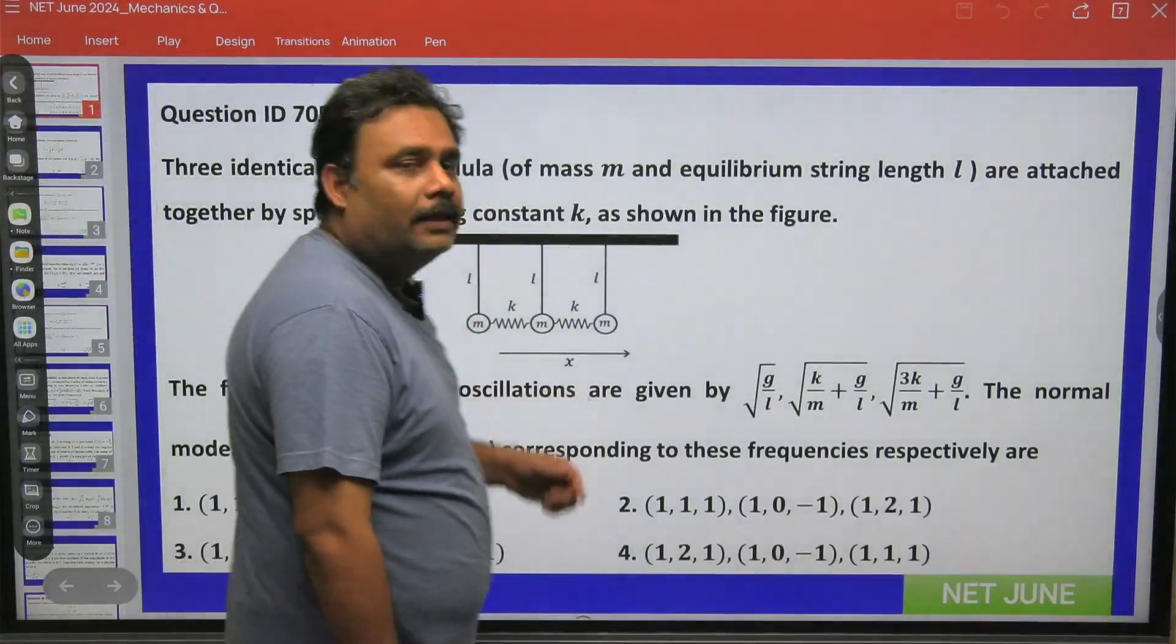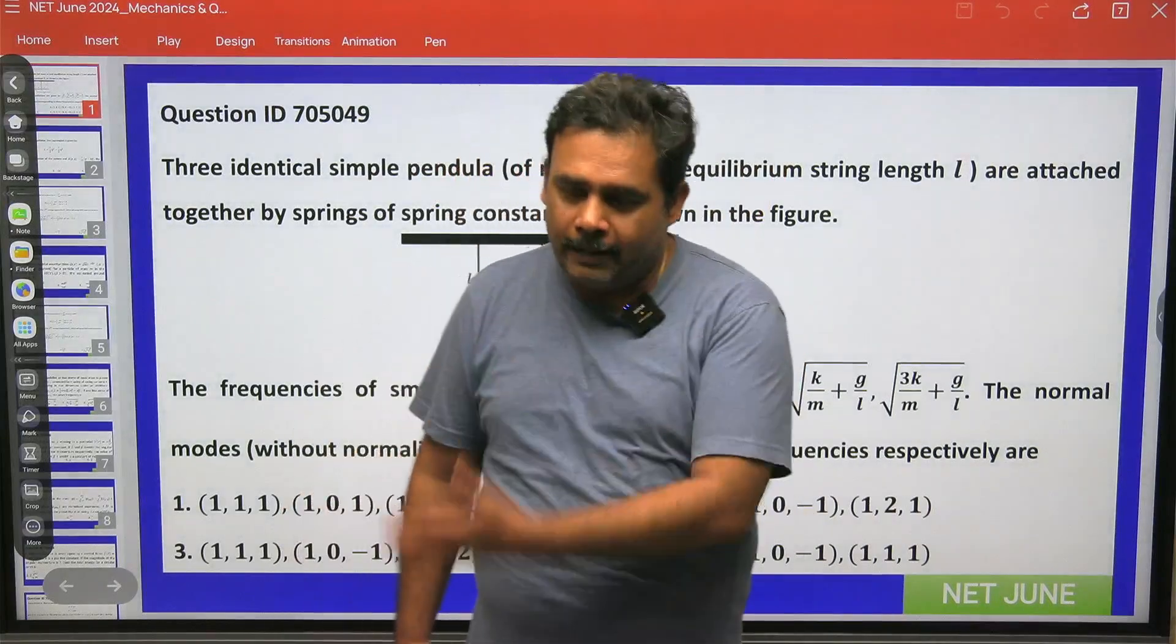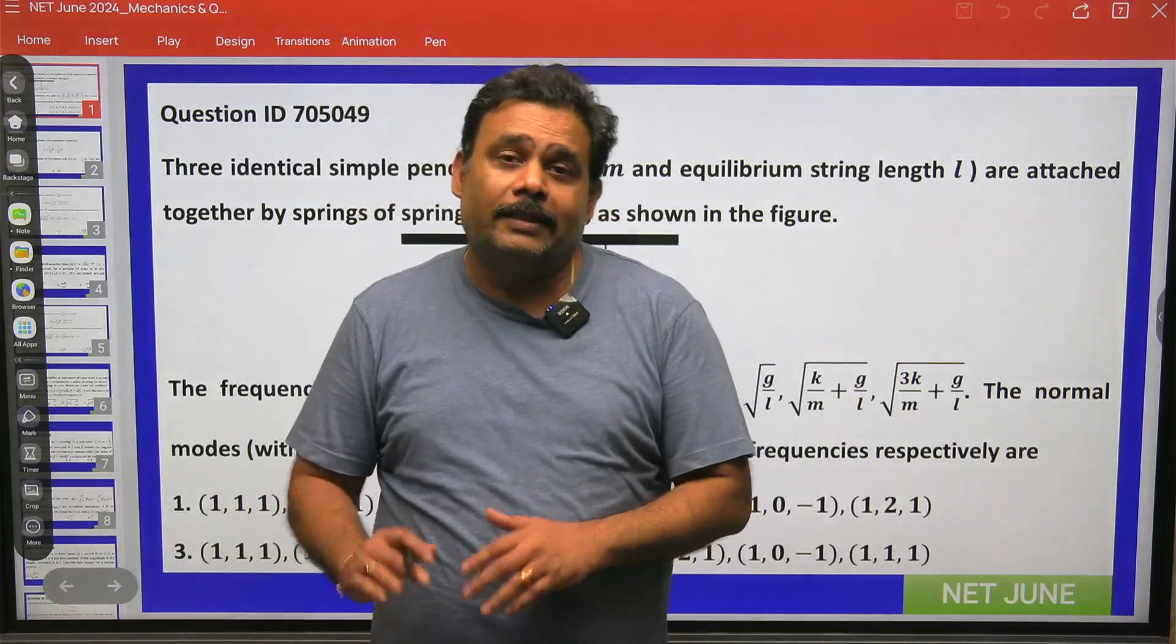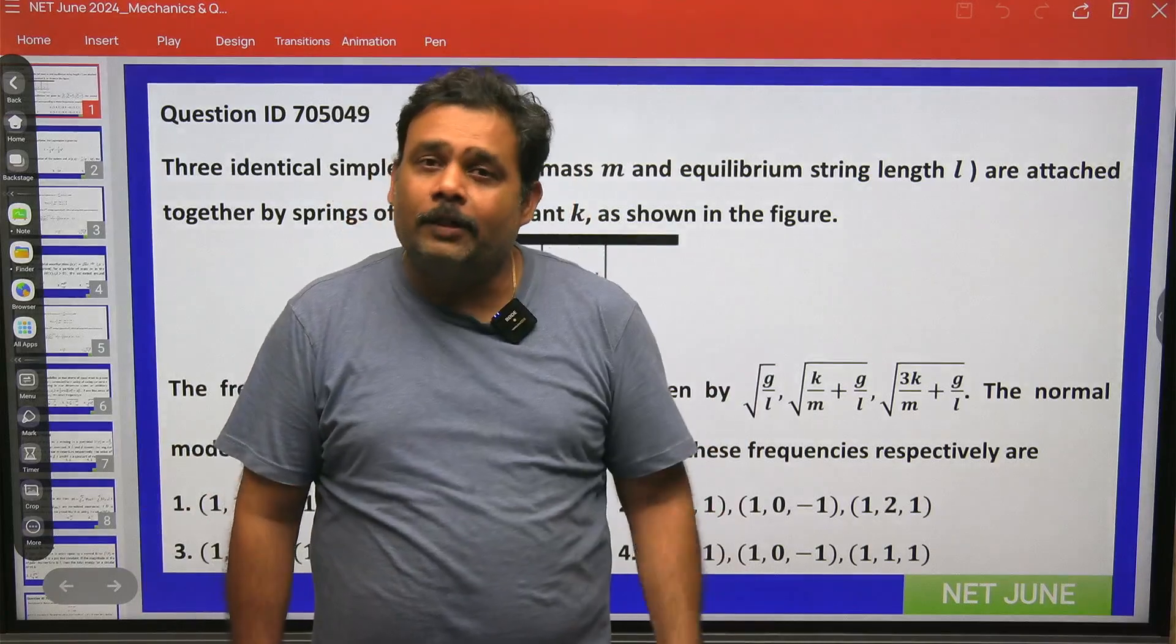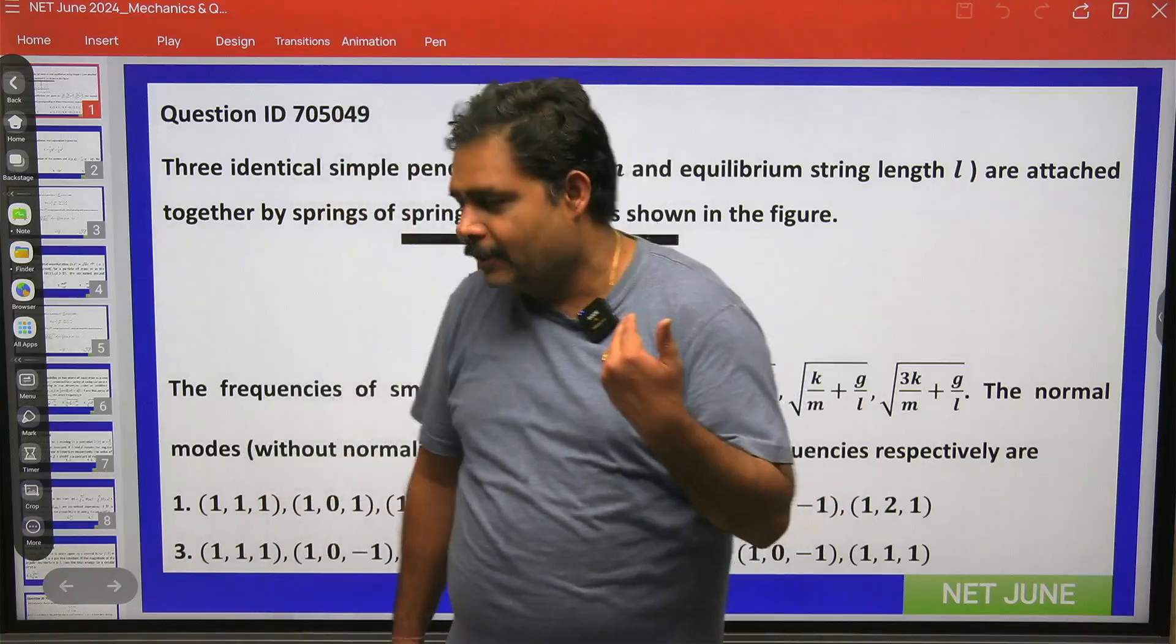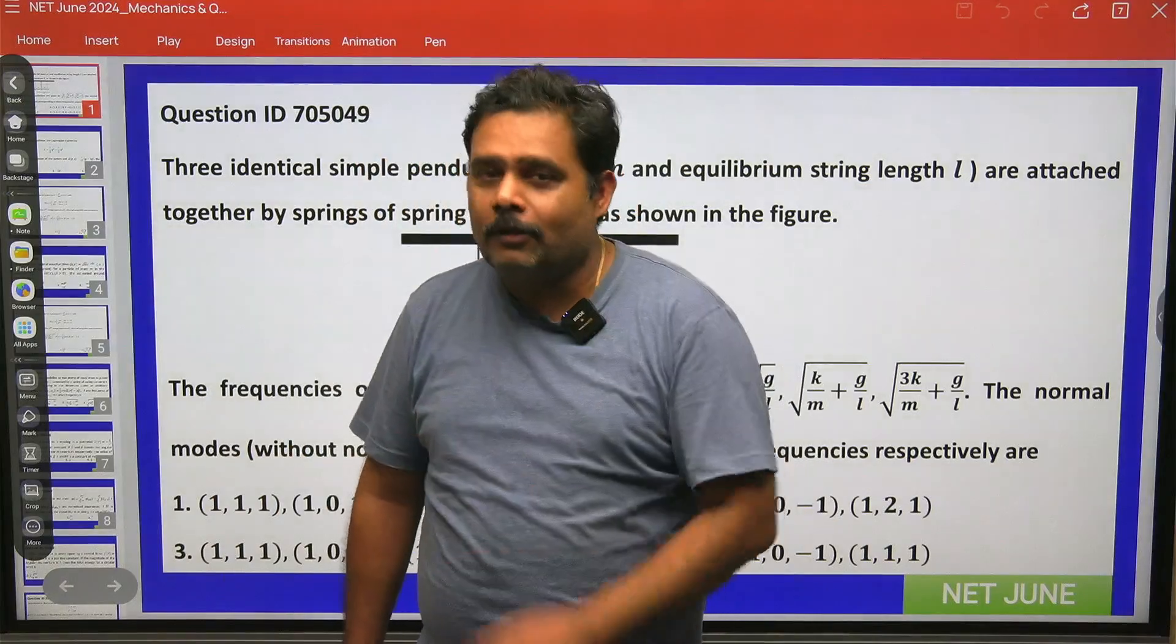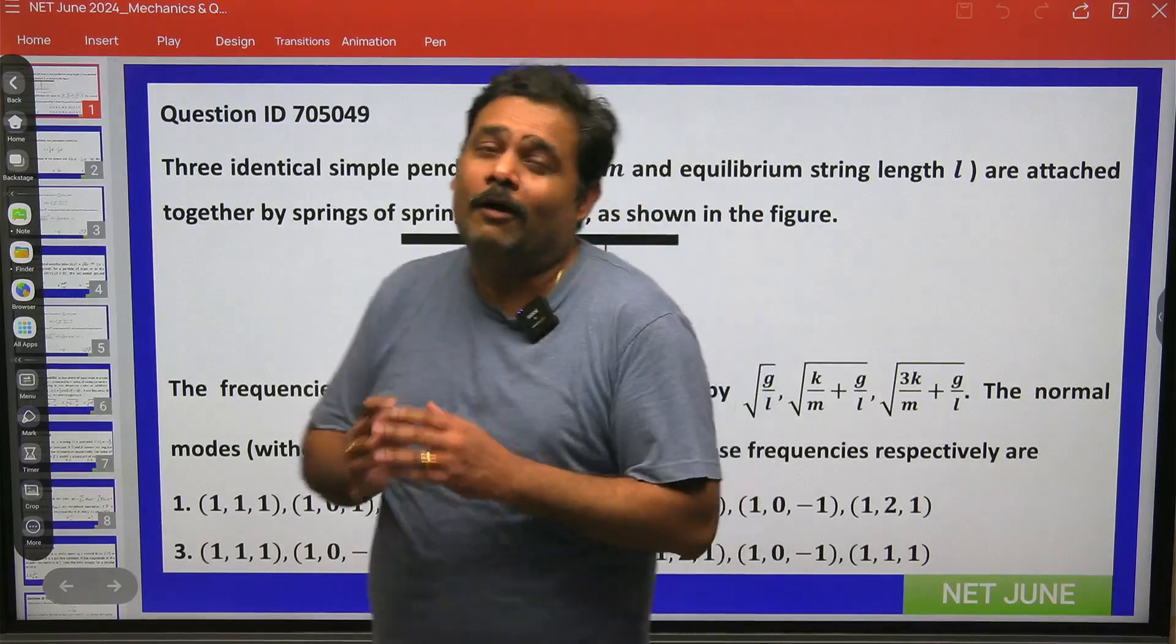Why? First you have to write the Lagrangian of the system. That means you have to write the kinetic energy and potential energy. Once you write the kinetic energy and potential energy, then you can go for writing the matrix of kinetic energy and potential energy for the small oscillations. That means you have to do the Taylor expansion of cos theta and sin theta also. That will come into picture and then you can find the normal mode. So it will take a lot of time.